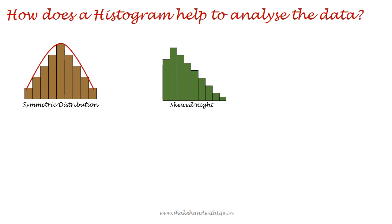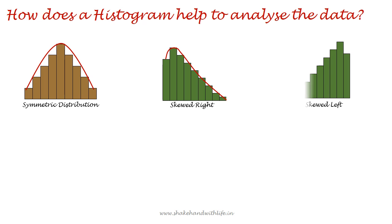When the vertical bars from the tallest bar descend and make a longer tail on the right-hand side, then this implies the data has right-handed skewness. When the vertical bars from the tallest bar descend and make a longer tail on the left-hand side, then this implies the data has left-handed skewness.